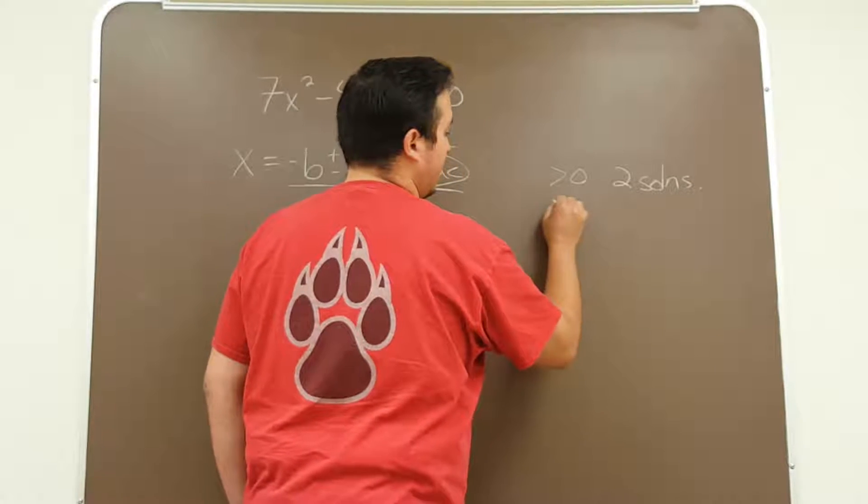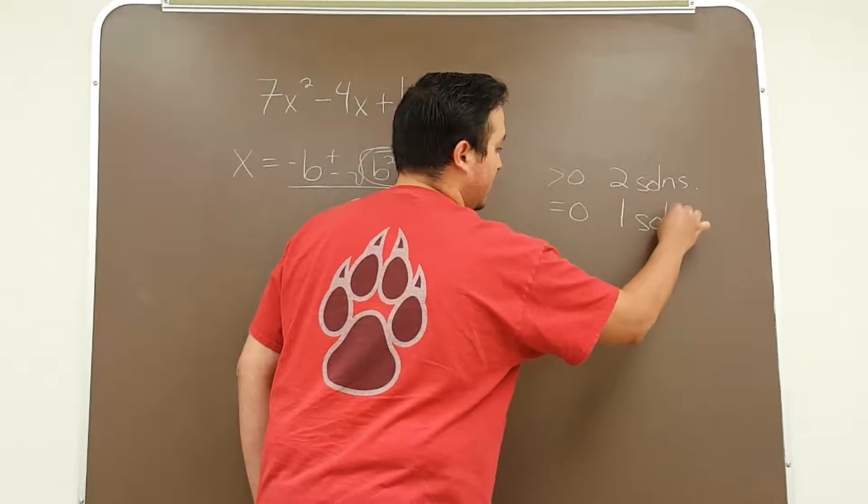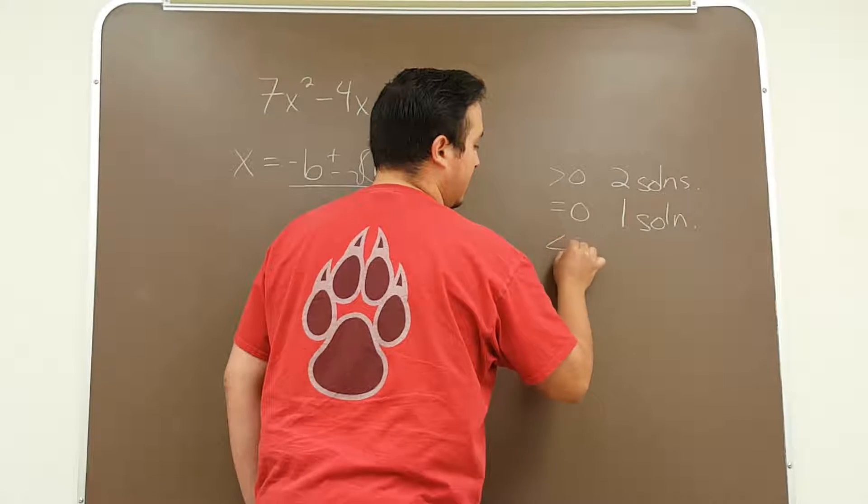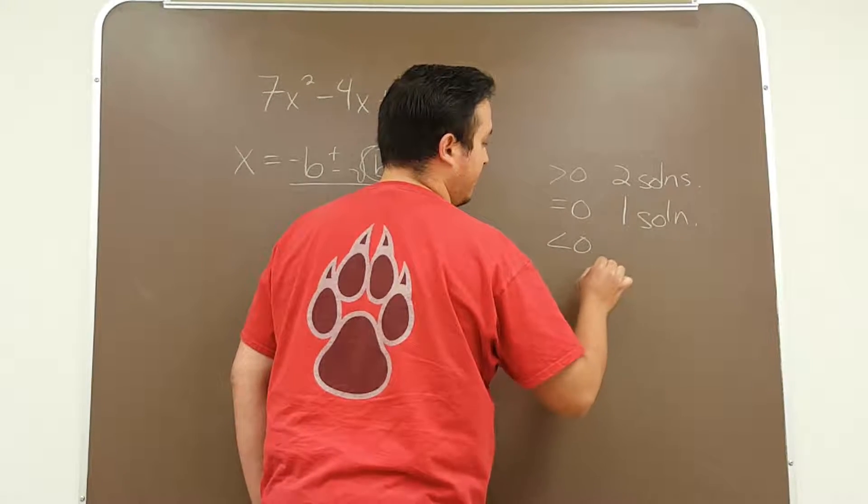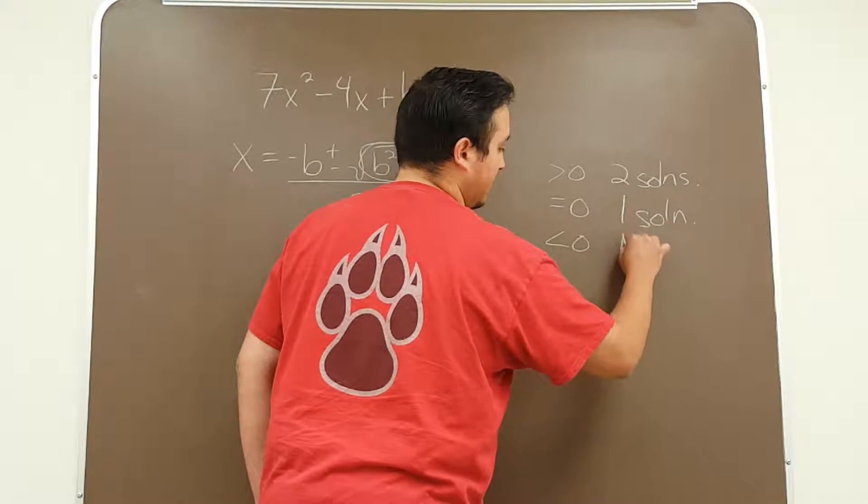If the discriminant is equal to 0, you're going to expect one solution and if it's less than 0, you're going to have no solution.